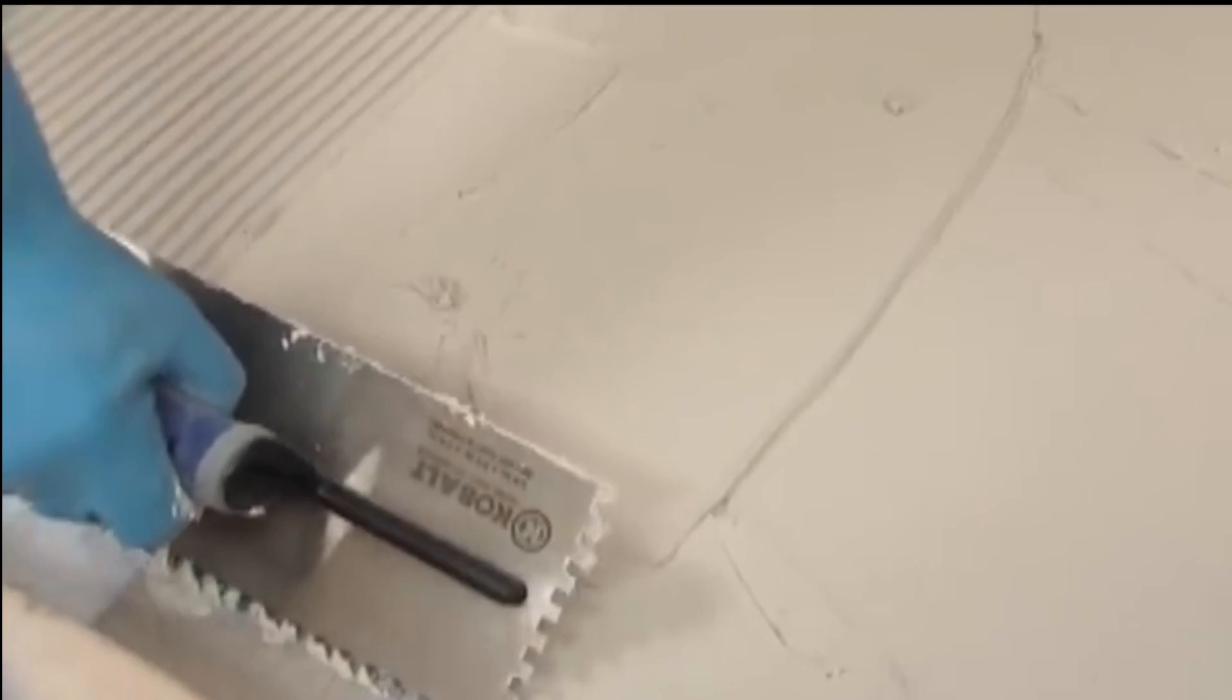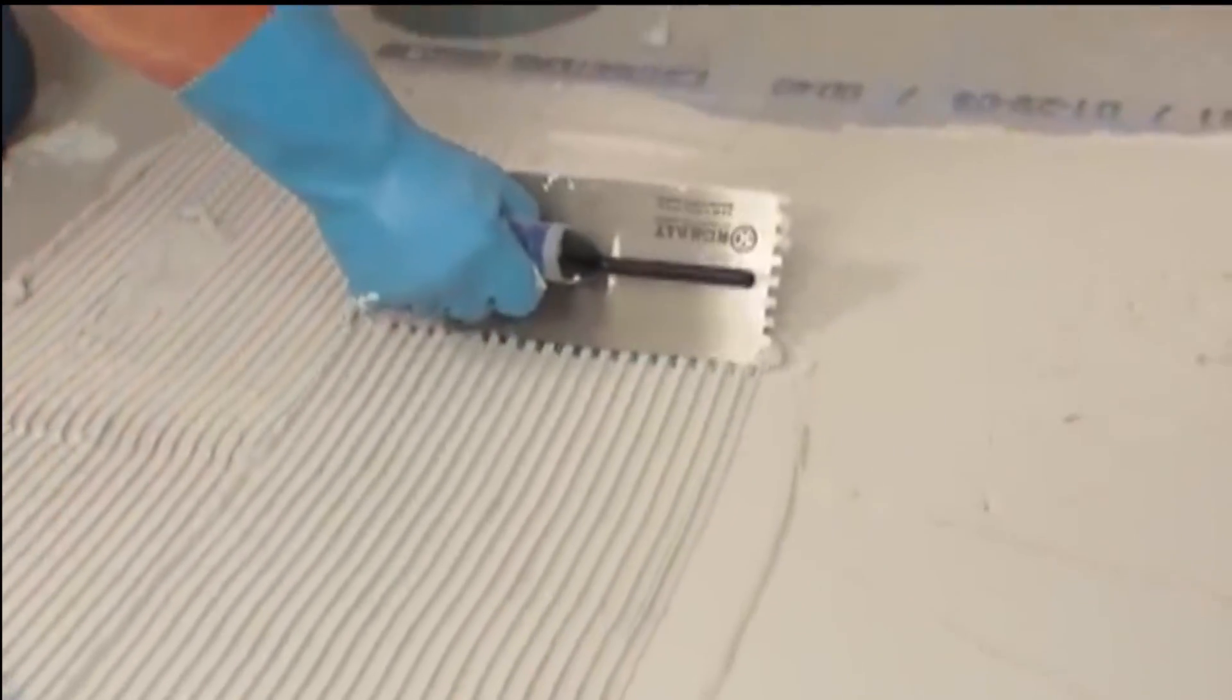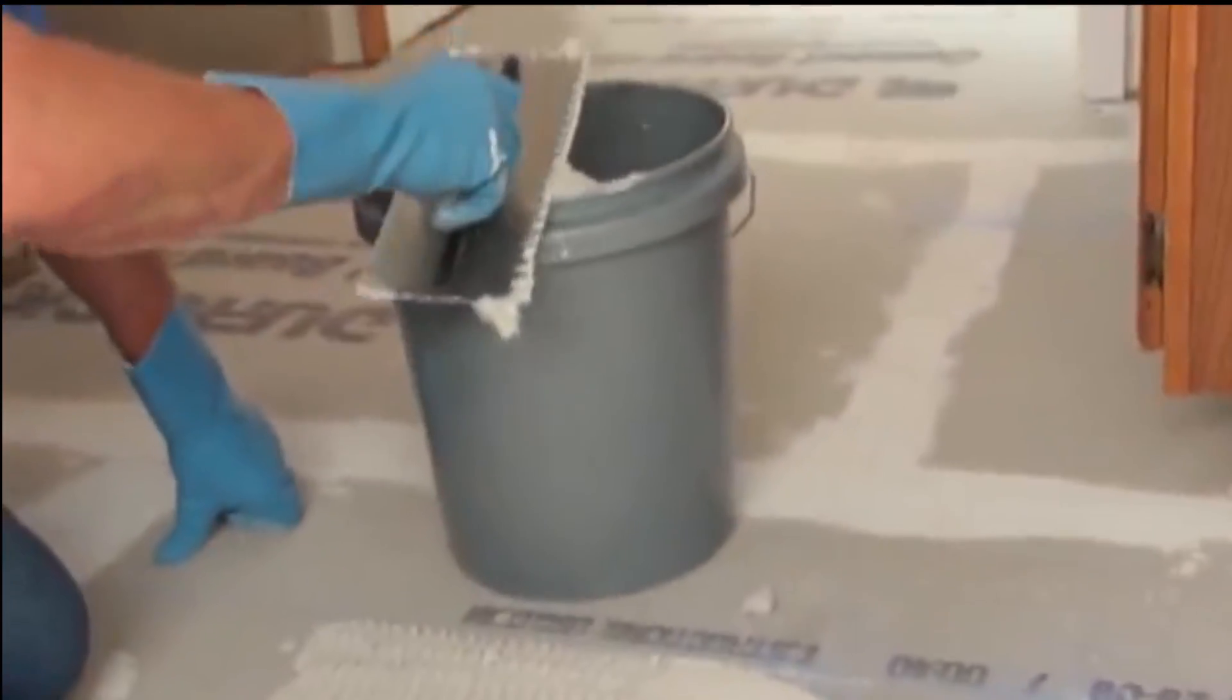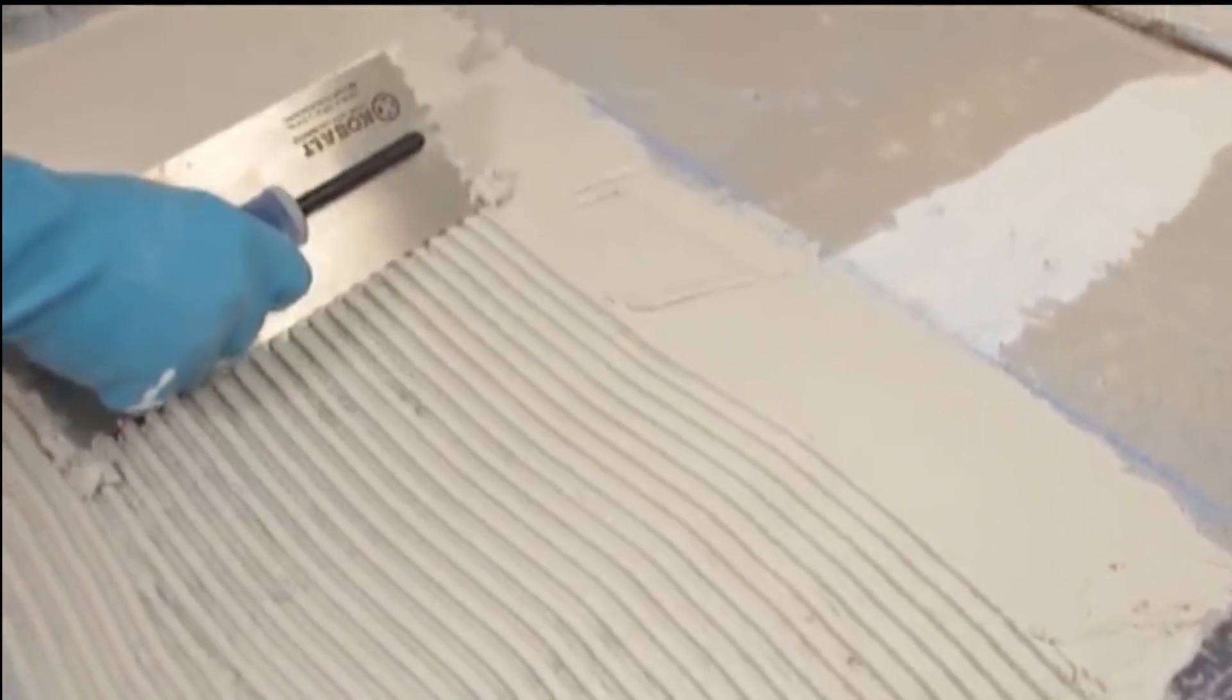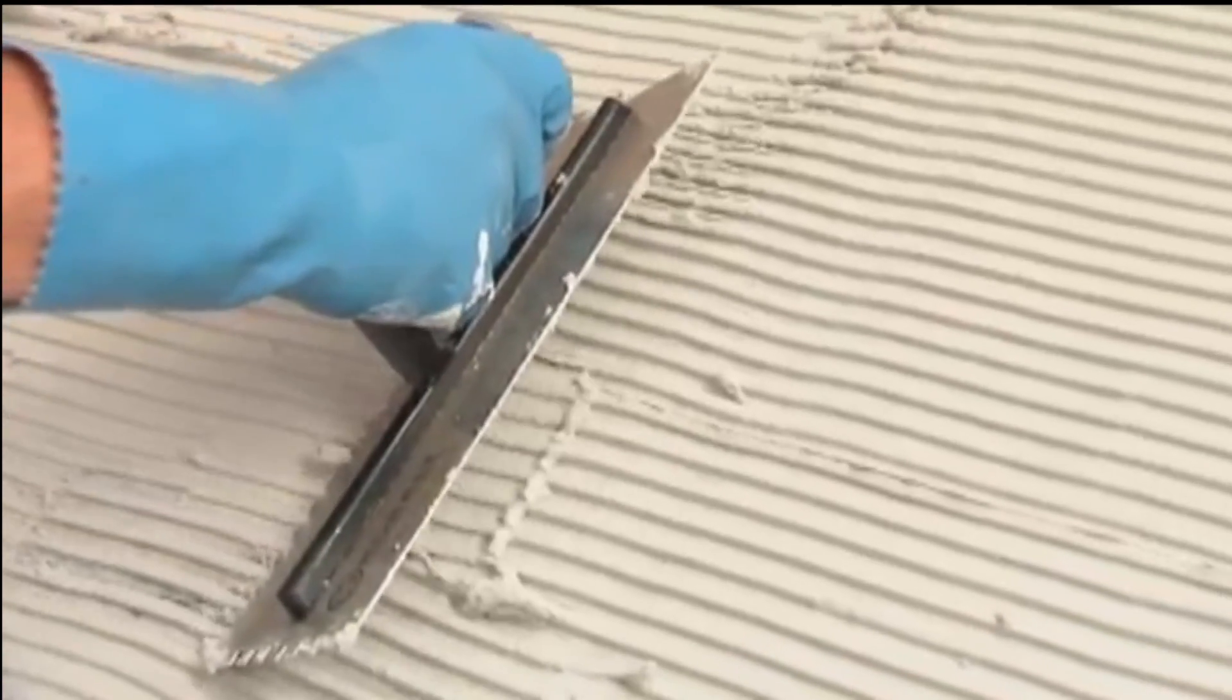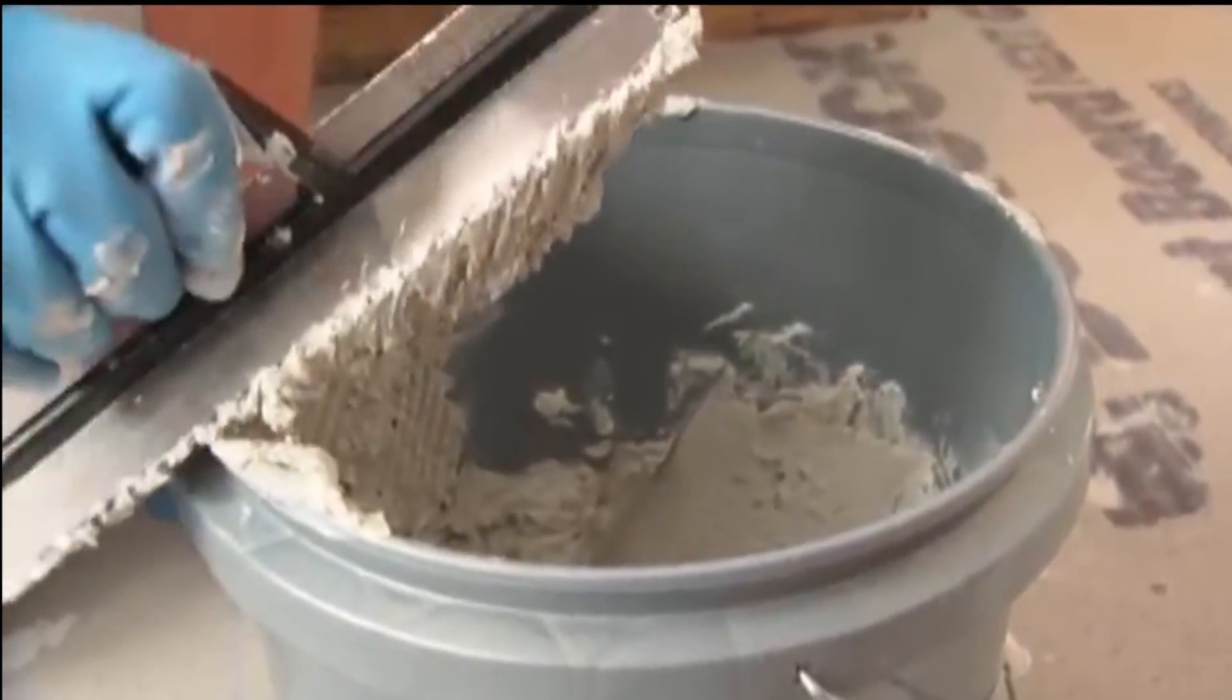Once the thin-set mortar is down, comb over it with the notched side of the trowel at a 45-degree angle. Comb it in one direction without making swirl patterns to ensure uniform application. Remove any excess with the trowel and place it back in the bucket.